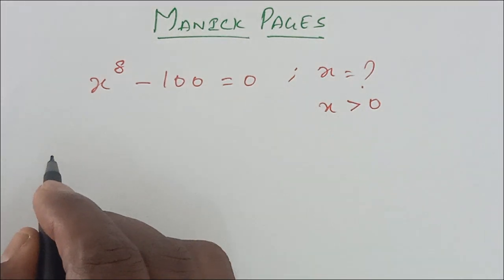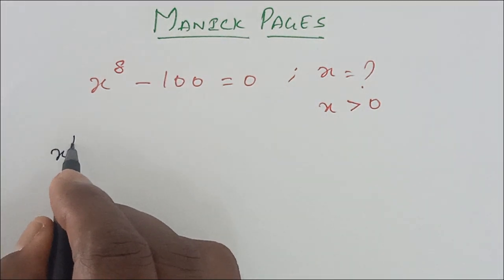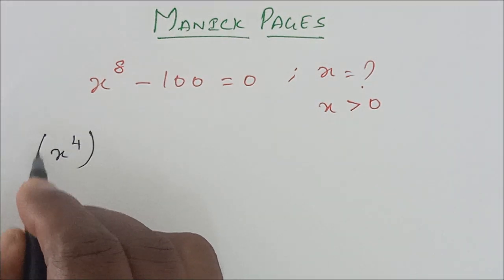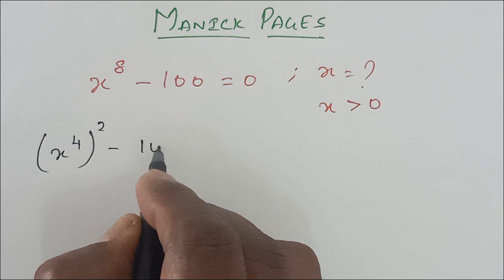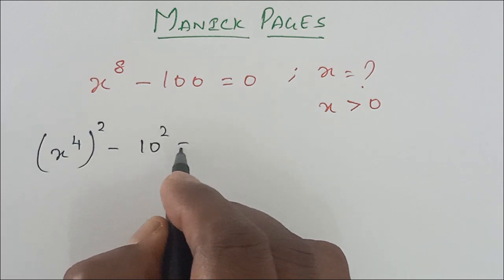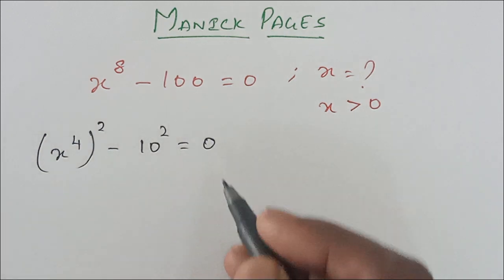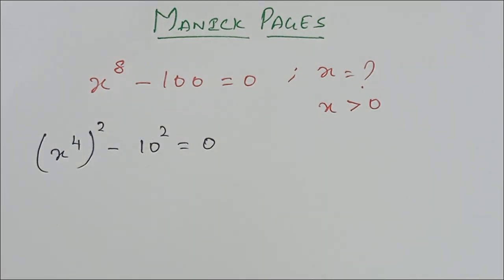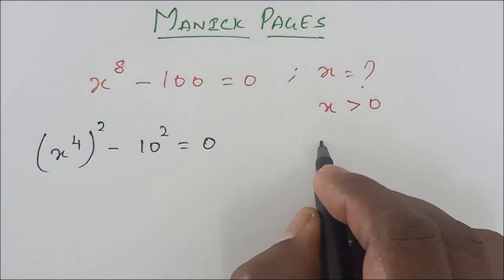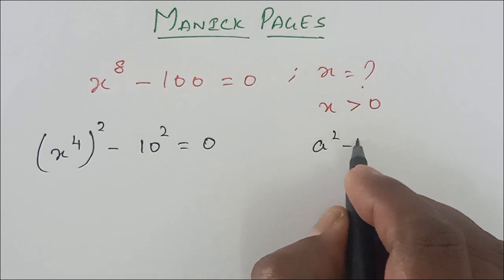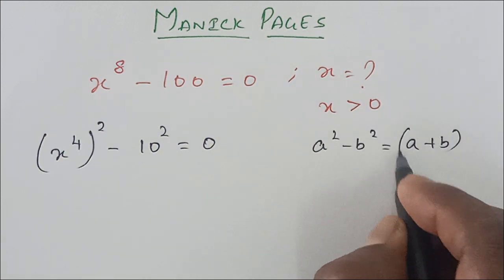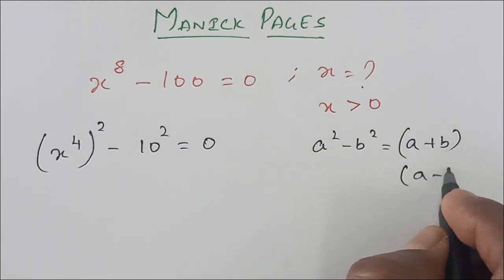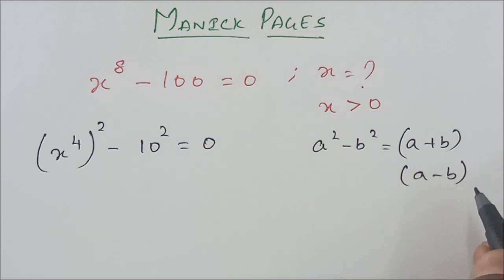We can write x^8 as (x^4)^2 minus 10^2, which equals zero. This is of the form a^2 minus b^2, which equals (a + b)(a - b).